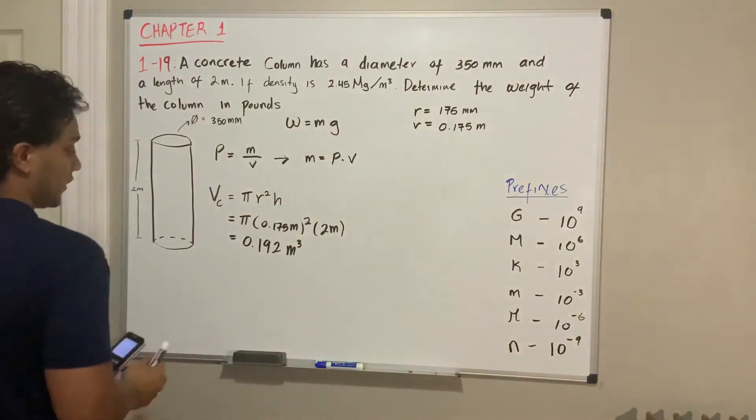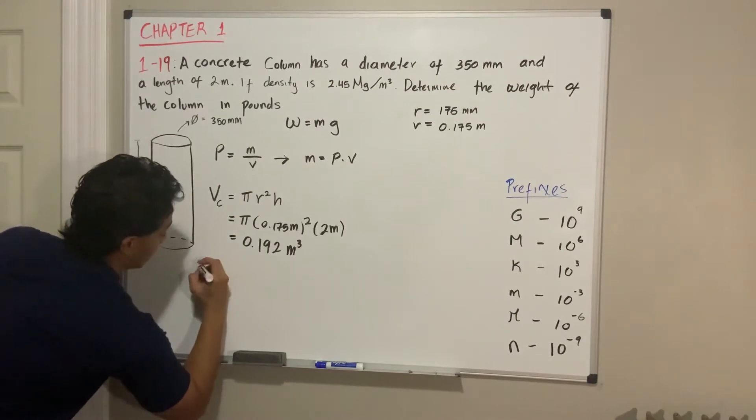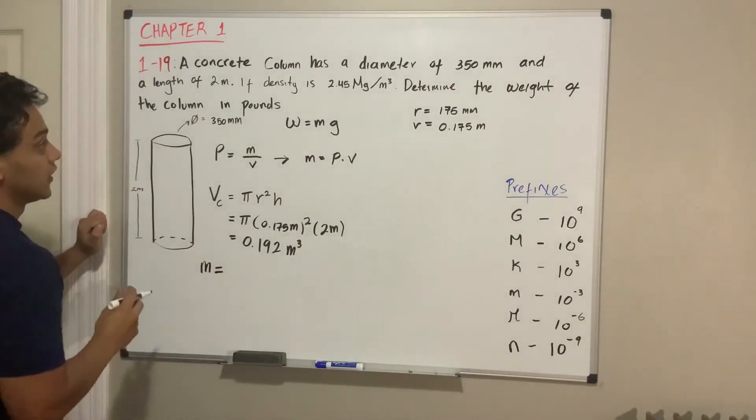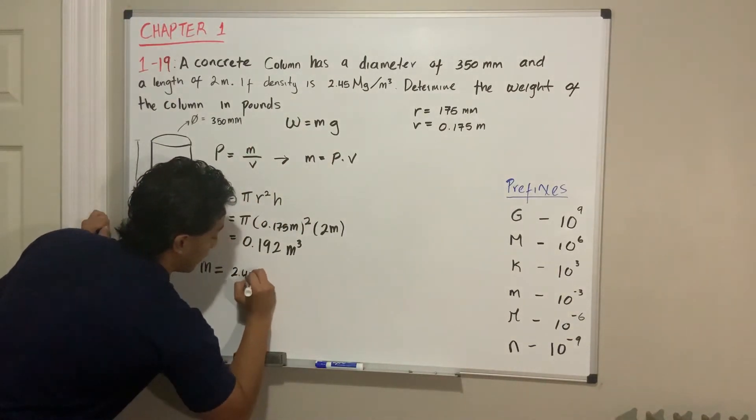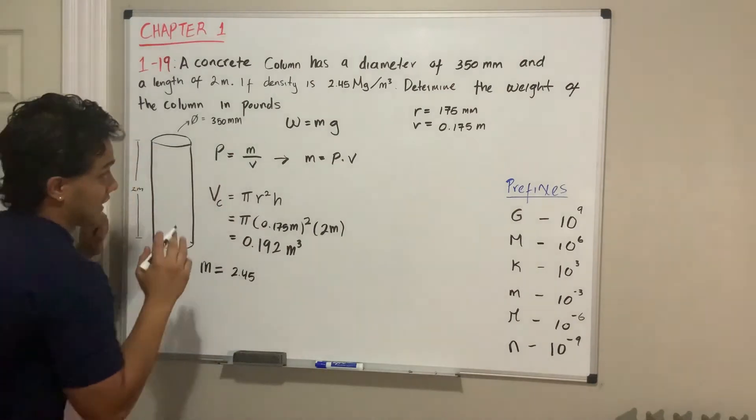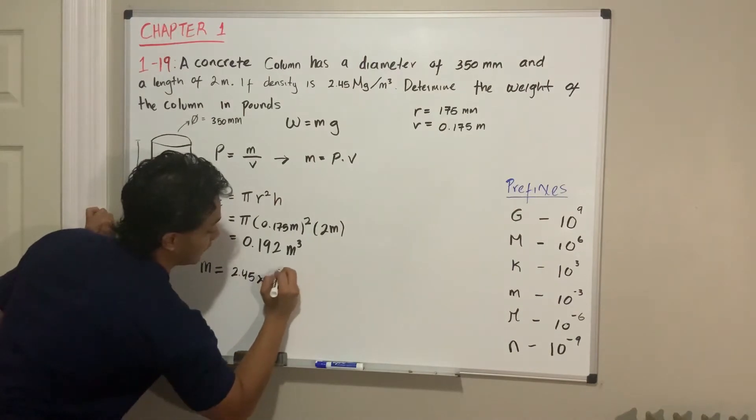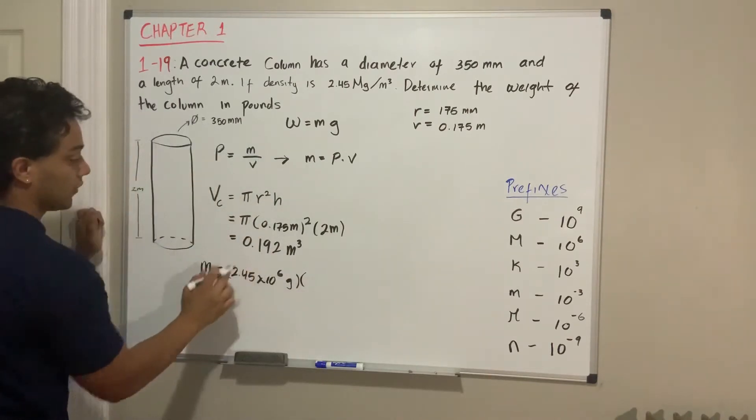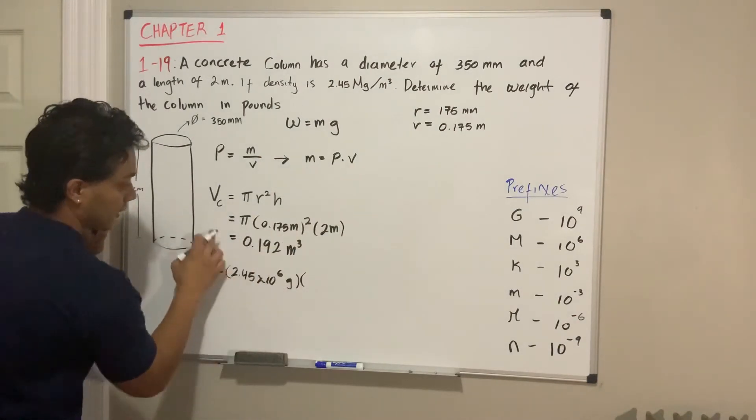At the end, we get that the mass is going to be equal to the density, which is 2.45 mega. If we look at mega, it's times 10 to the positive 6 grams, multiplied by what we got in our volume.